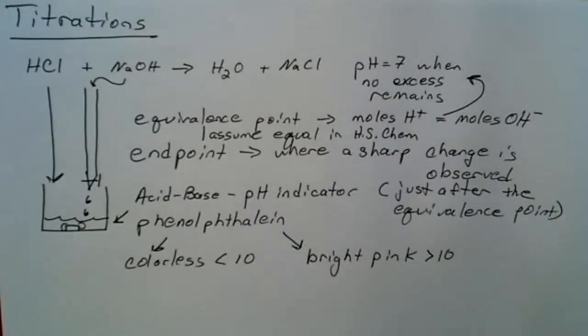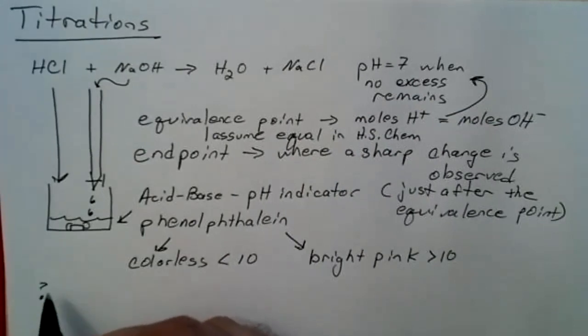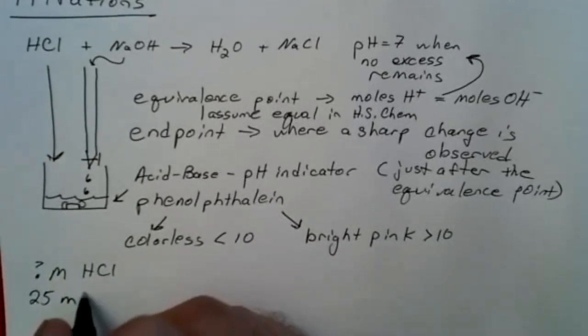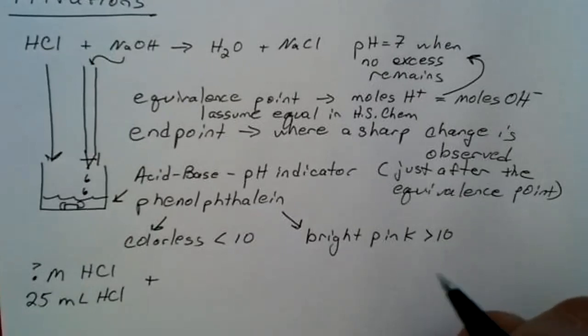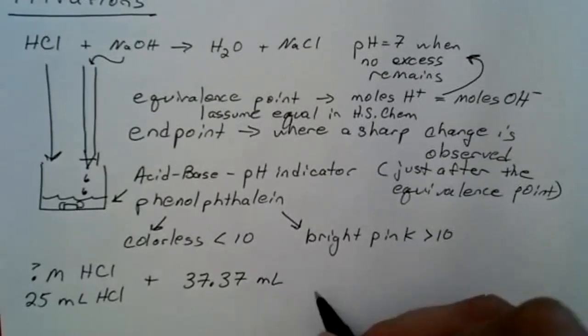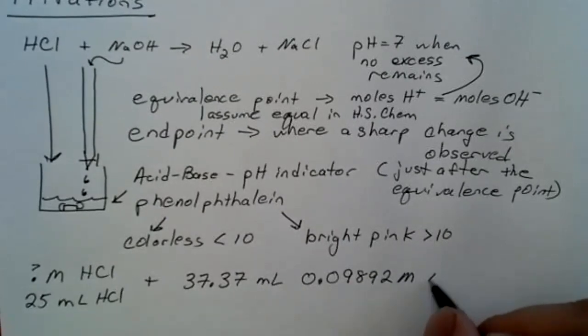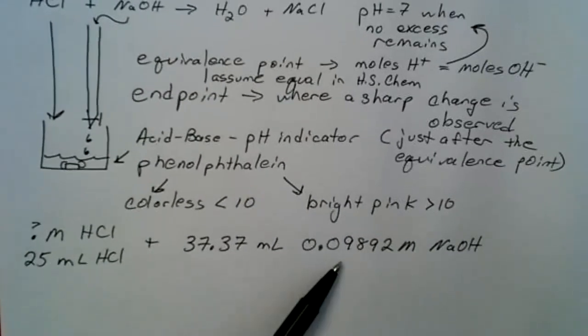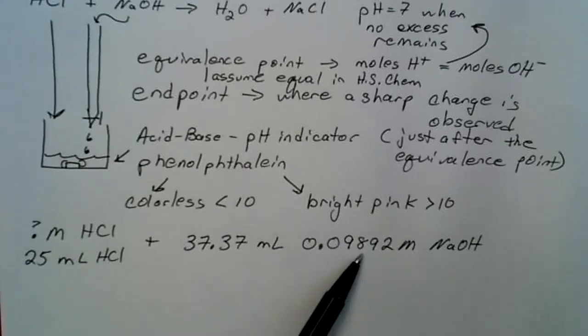What you can then do is go through stoichiometry. Let's say that we had an unknown sample, unknown concentration of HCl, but I took 25 milliliters of it and I reacted this with, or I titrated it with, 37.37 milliliters of 0.09892 molar sodium hydroxide. What happens when you do titrations is that you first standardize your solution. That is why this is known to such a high accuracy, high precision, for the concentration.